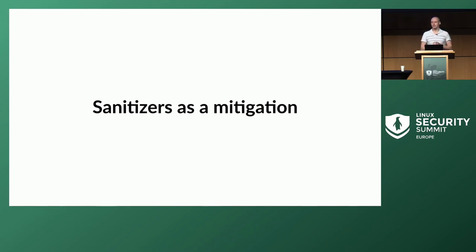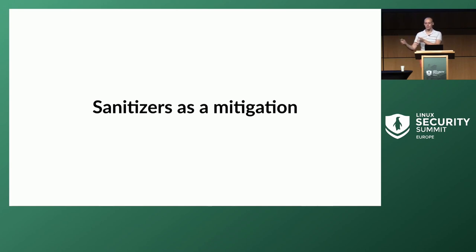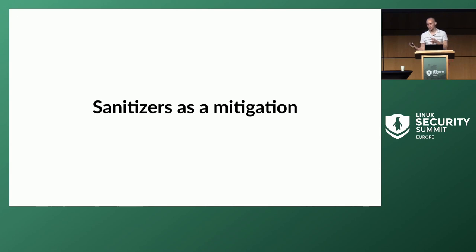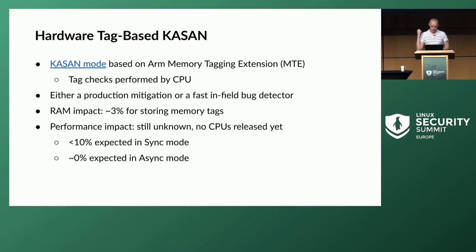The third idea is: how about using sanitizers as actual mitigations? If sanitizers are able to find bugs, they can just panic the kernel whenever a bug is found — which might make sense from a security perspective because if somebody is trying to exploit a memory corruption, the sanitizer might catch it and panic the kernel, protecting it. The mode developed for this case is called hardware tag-based KASAN.